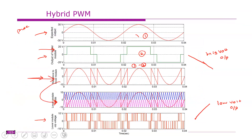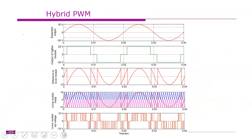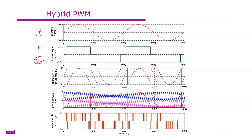So this idea is simple. First we have the expected modulating signal. The highest voltage bridge is operated in fundamental frequency mode — square wave or quasi square wave. Then we subtract that output from the expected signal. So the remainder acts as the modulating signal for the remaining bridges, instead of the actual sine wave.